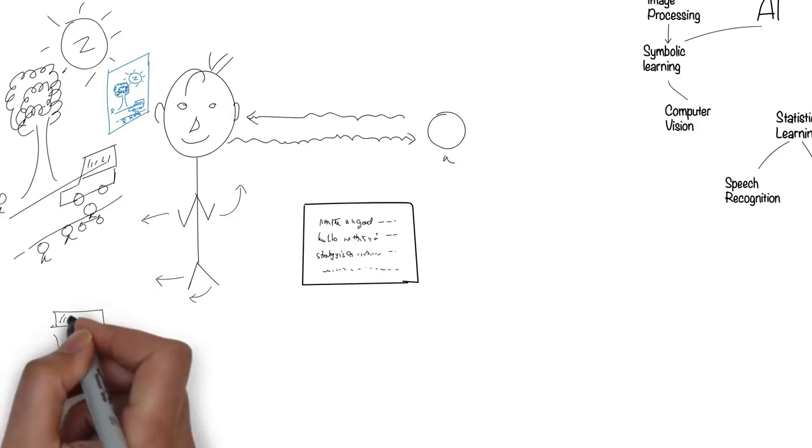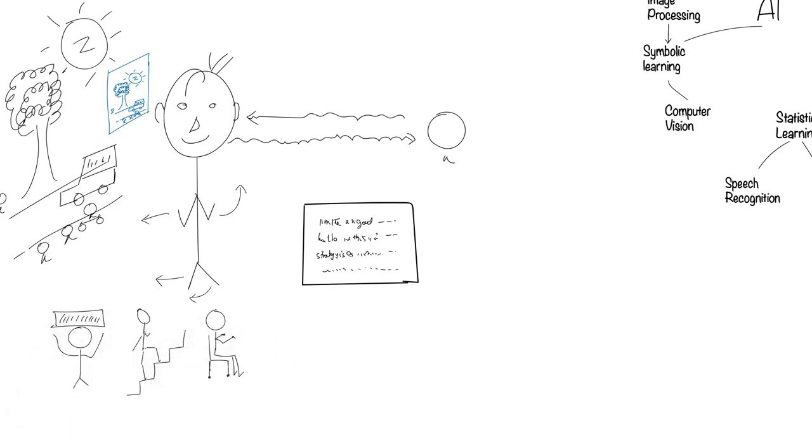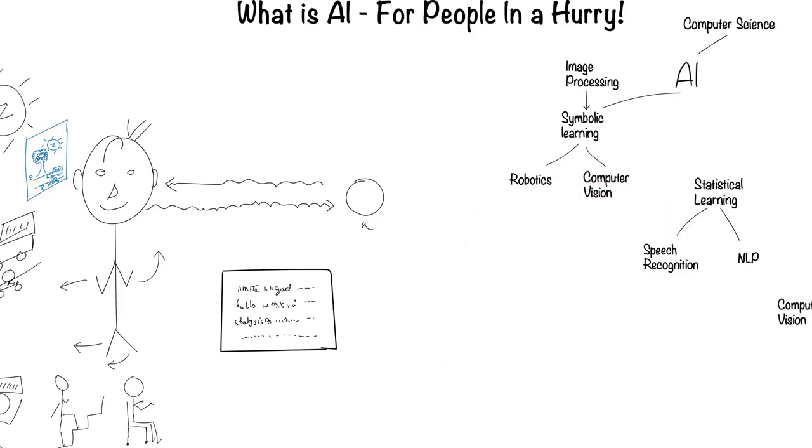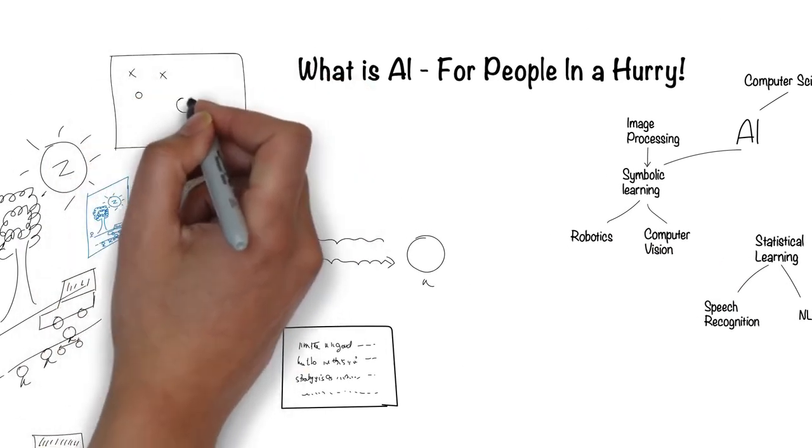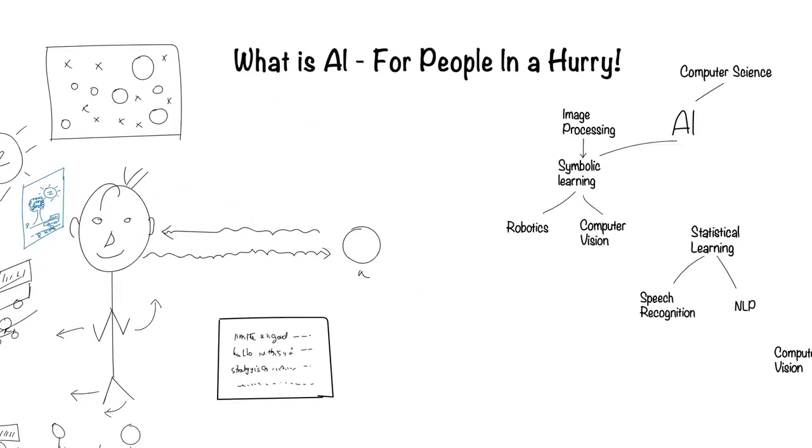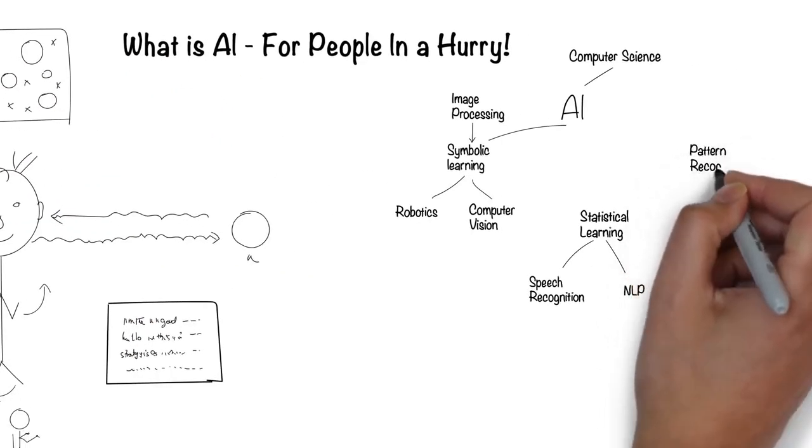Humans can understand their environment and move around fluidly. This is the field of robotics. Humans have the ability to see patterns, such as grouping of like objects. This is the field of pattern recognition.